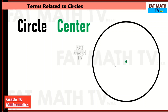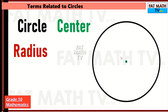The distance from this point to this is the same as the distance of this point to this point, or this point to the center. And that distance is called the radius. So for the radius, we can have the line segment connecting the center and any point on the circle, or we can refer to radius as the length of this line segment.